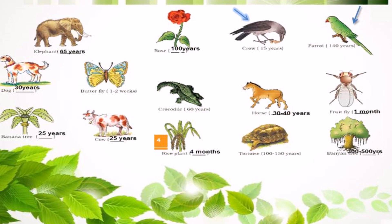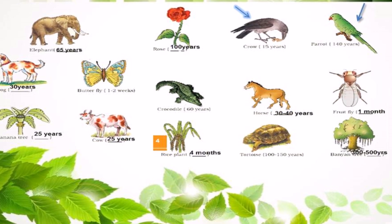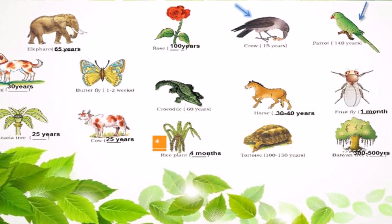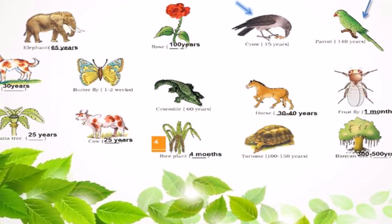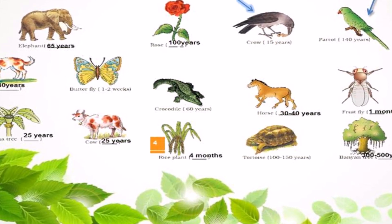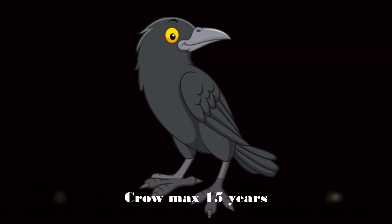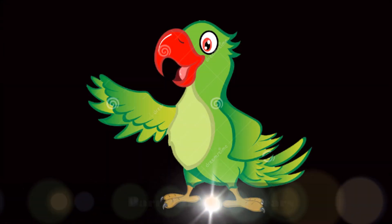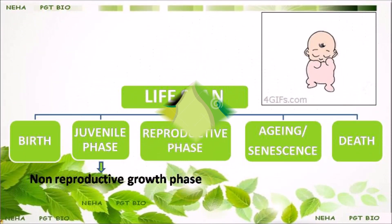Lifespan is variable, as you can observe in the diagram given in the NCERT book. Lifespans are not necessarily correlated with size. For example, crow and parrot are not very different in size, yet their lifespans show a wide difference — a crow can live for a maximum of 15 years, whereas a parrot can live up to 140 years.